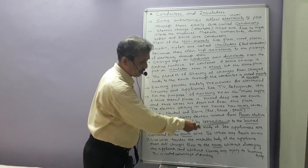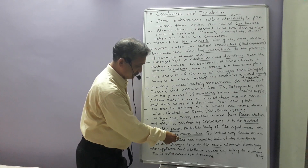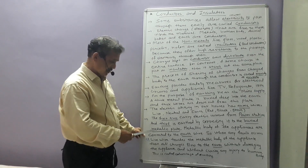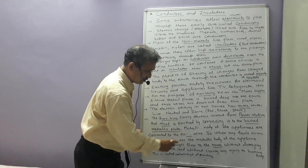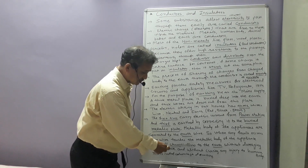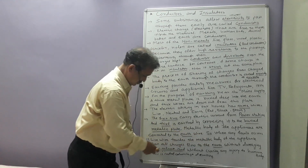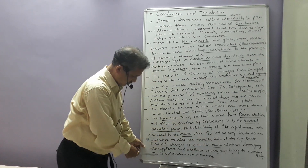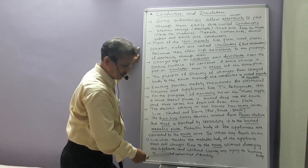When the metallic body of an appliance is connected to the earth wire, and any fault occurs in the appliance or the live wire touches the metallic body, all the electric charges flow to the earth without damaging the appliance and without causing any injury to the human body. This is the advantage of earthing or grounding.